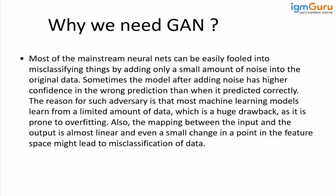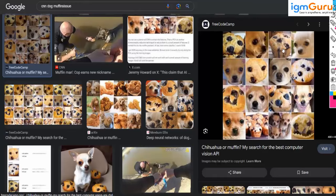GAN takes the existing images, tries to understand their distribution, and uses that distribution to generate more images. Earlier we were doing augmentation by cropping corners, rotating, or flipping the image, but this doesn't produce good augmented data. GAN architecture is able to solve these problems. Another famous example: a model not being able to distinguish the special breed called Chihuahua versus muffins, because in small-scale pictures they look the same. GAN architecture can resolve this issue by generating more realistic images to provide more data and features.